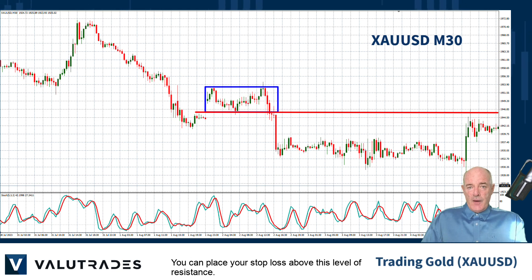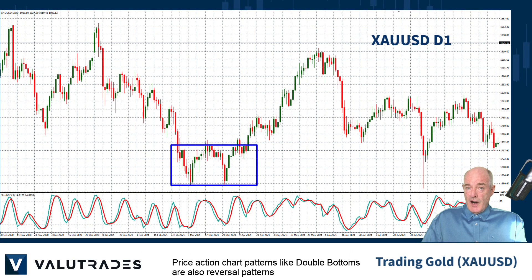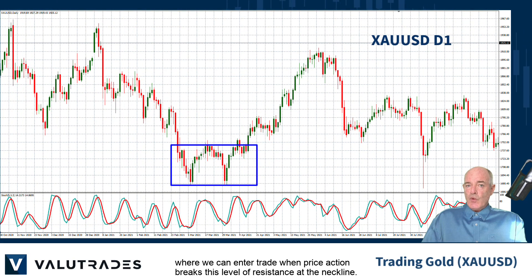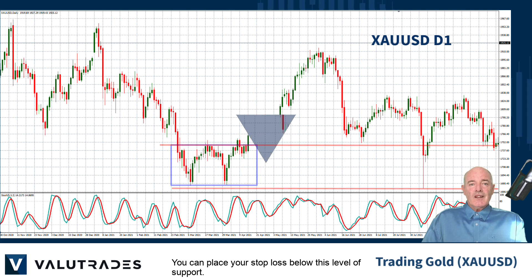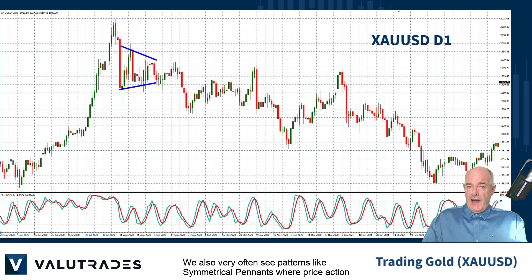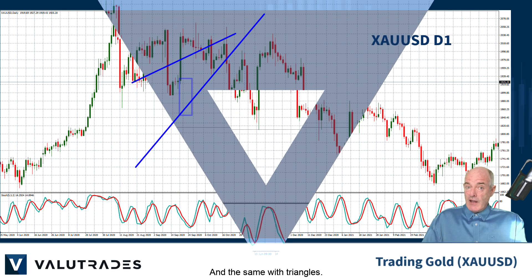You can place your stop loss above this level of resistance. Price action chart patterns like double bottoms are also reversal patterns where we can enter trades when price action breaks this level of resistance at the neckline. You can place your stop loss below this level of support. We also very often see patterns like symmetrical pennants where price action will usually break out of the consolidation quite dramatically. And the same with triangles.